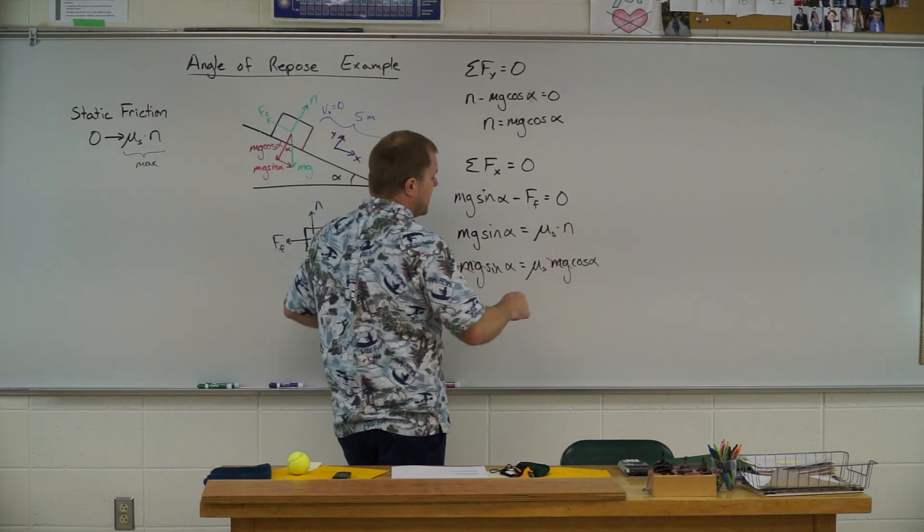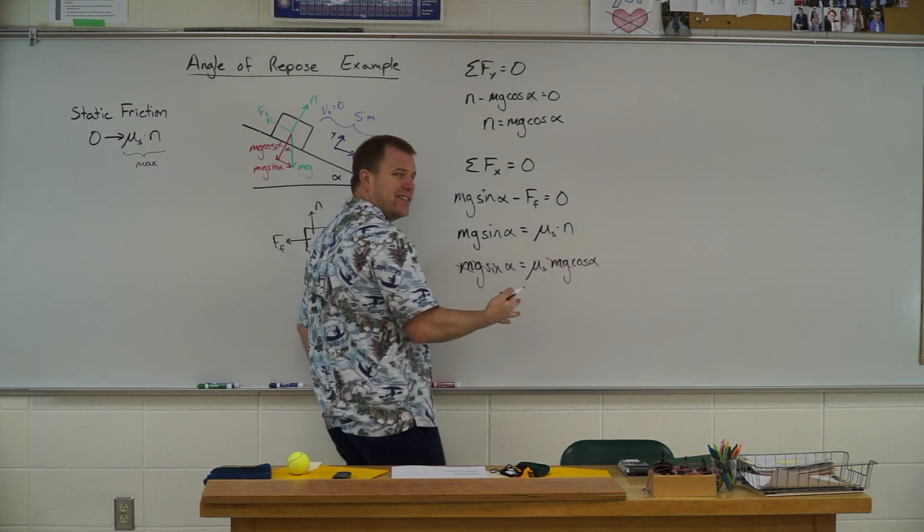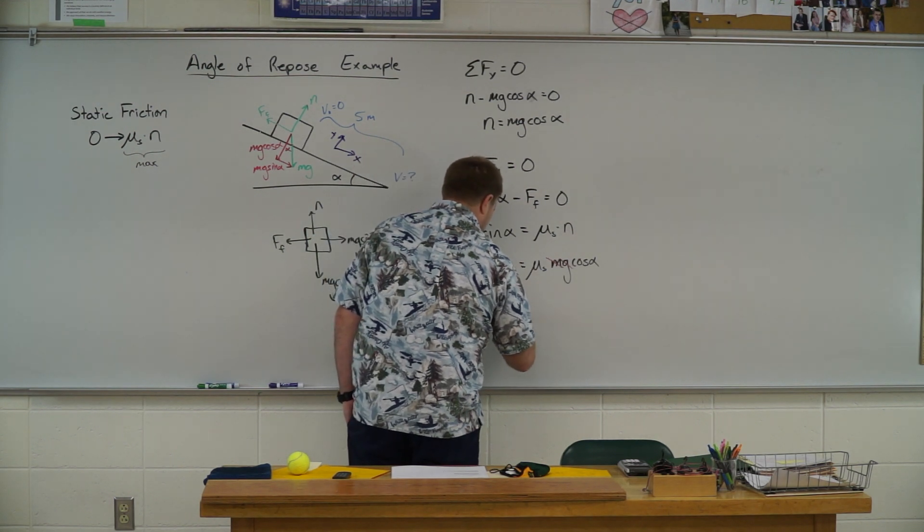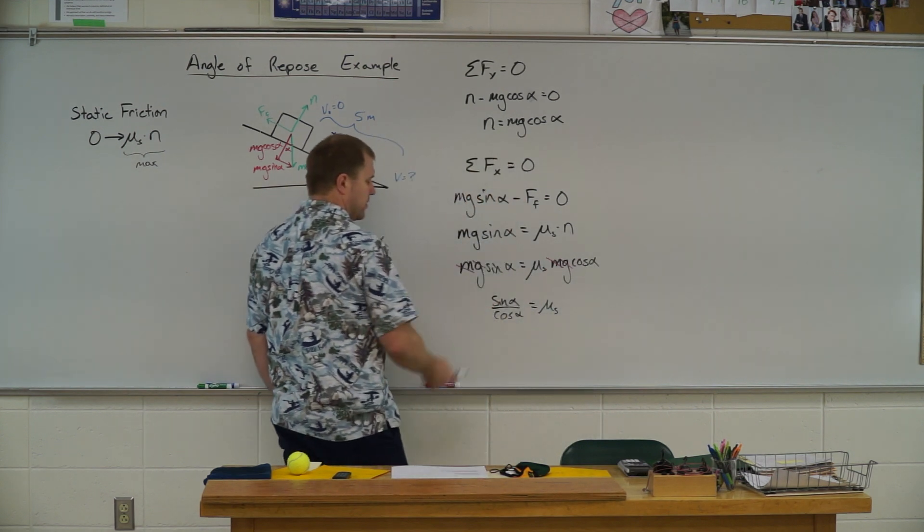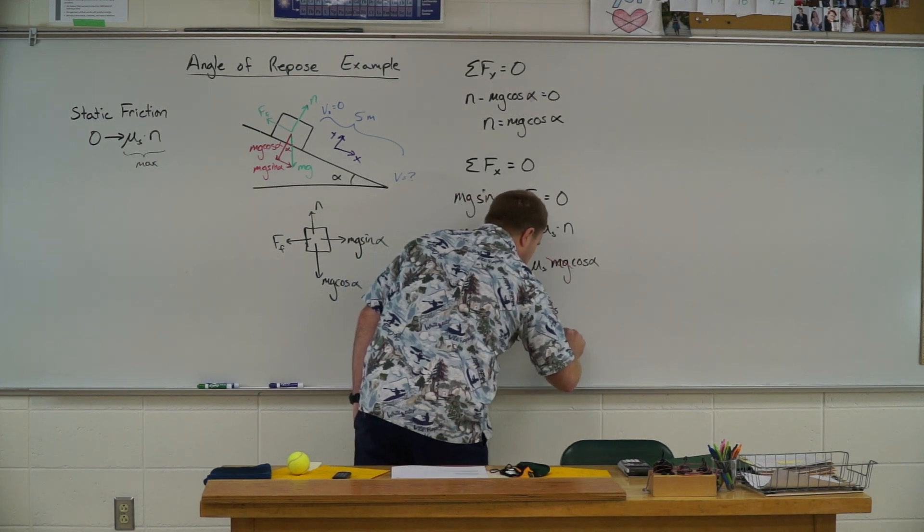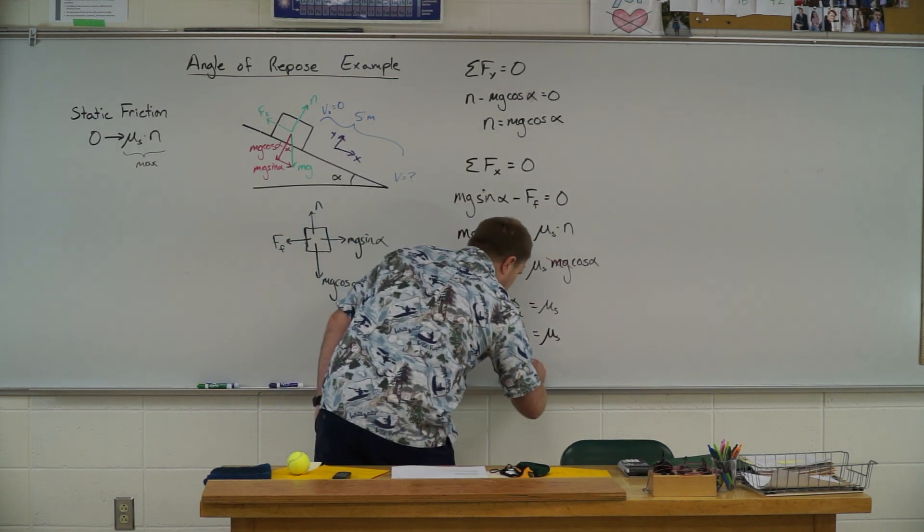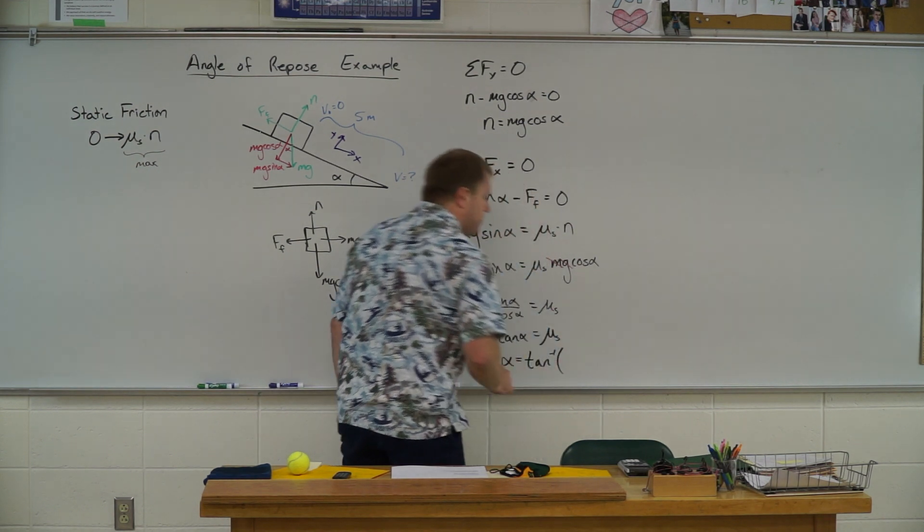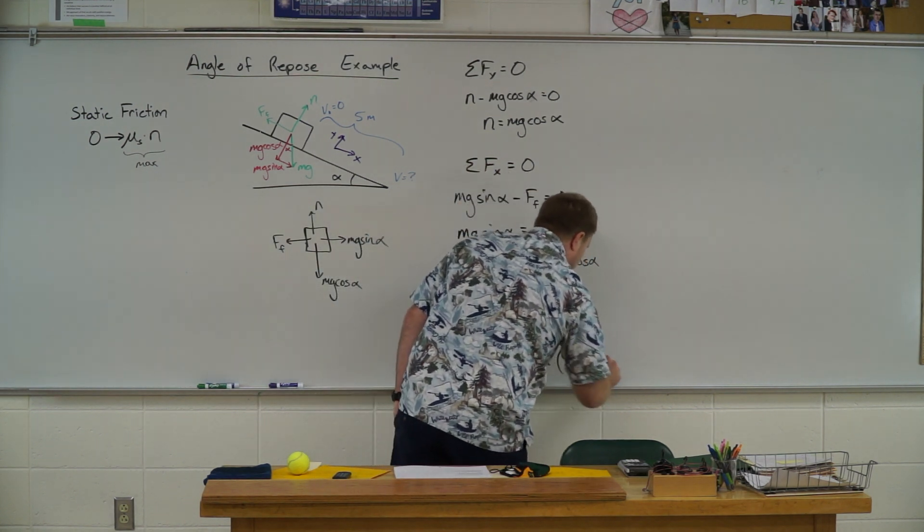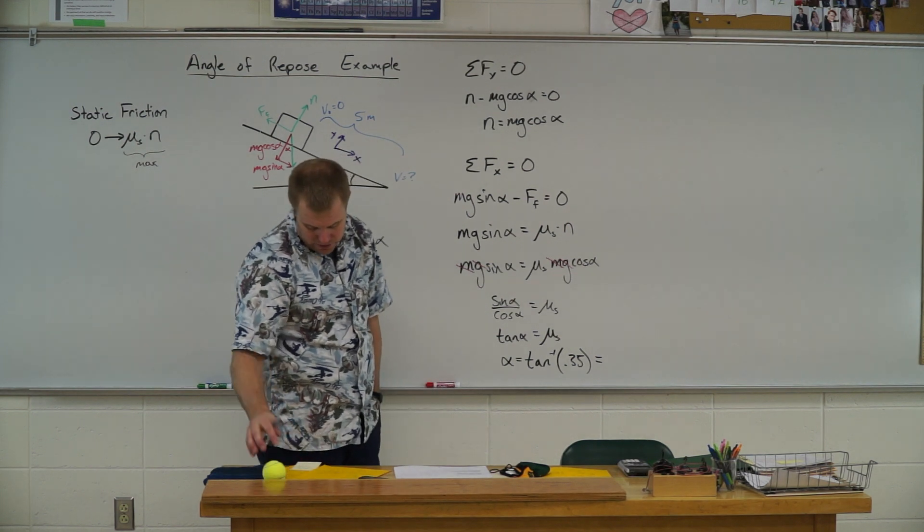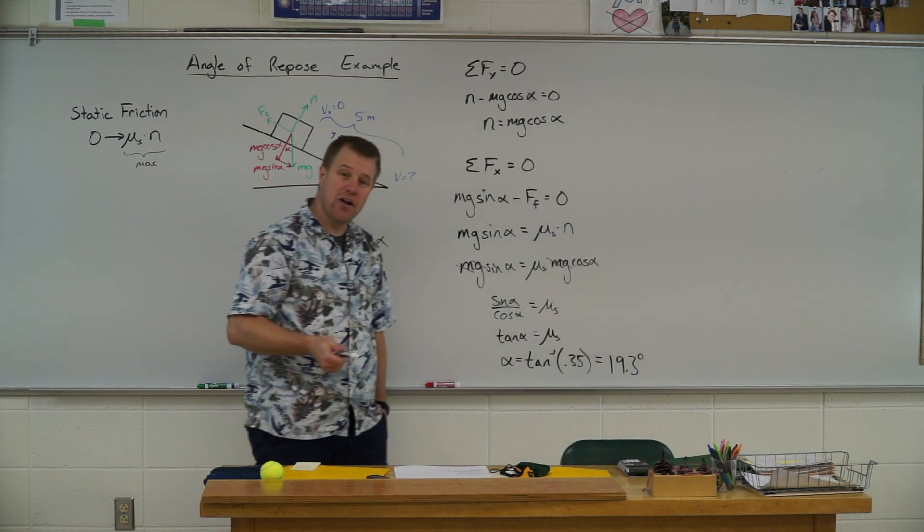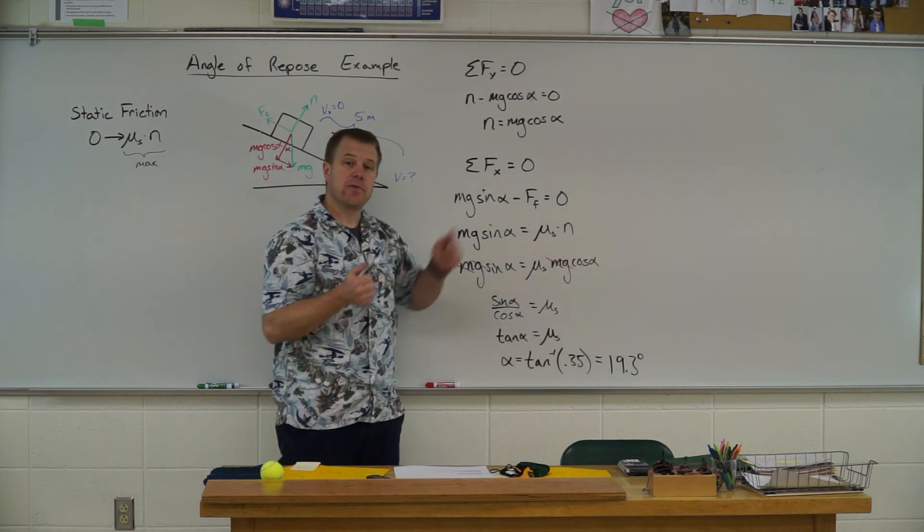Okay. So lastly, I just have to solve for alpha, but I got it in two places. So we're going to have to do a little trick here. When I divide cosine of alpha over, I get sine alpha divided by cosine alpha. And doing a little trick here, sine over cosine is actually tangent. So I end up with the tangent of alpha equals mu sub s. And to find alpha, I just need to say alpha is going to equal the inverse tangent of mu sub s, which they gave to us as 0.35. And so our angle of repose on this one comes out to be 19.3 degrees. Now I'm going to go ahead and store that on my calculator because I'm going to need that for the next problem.